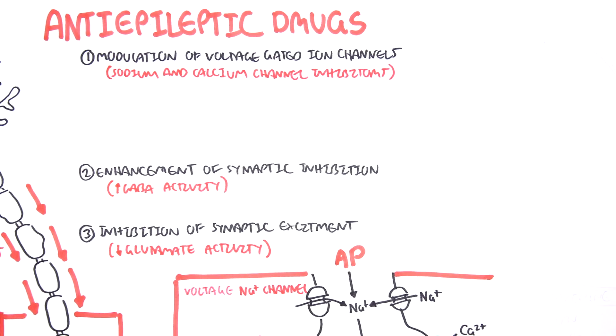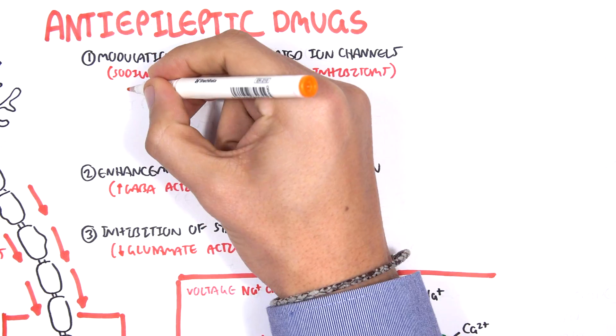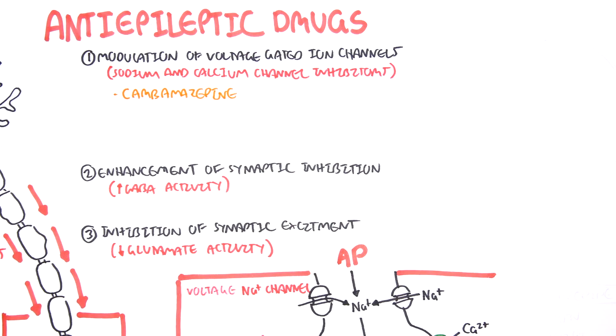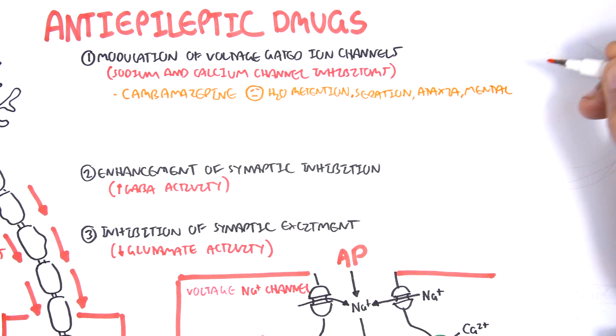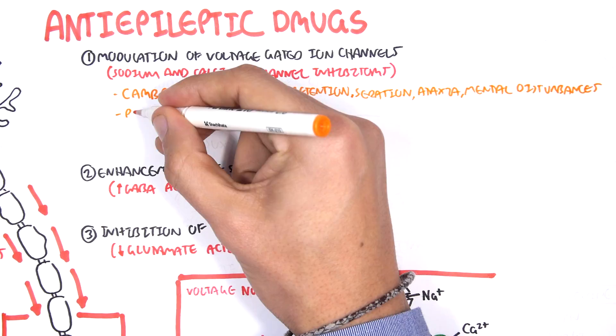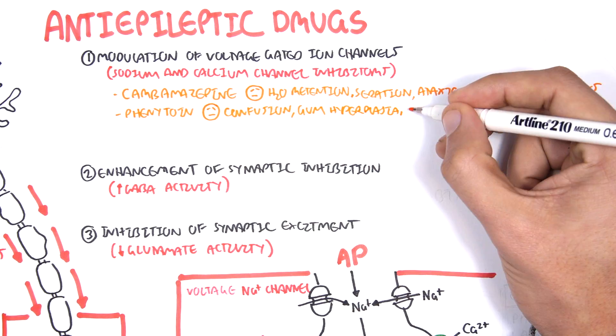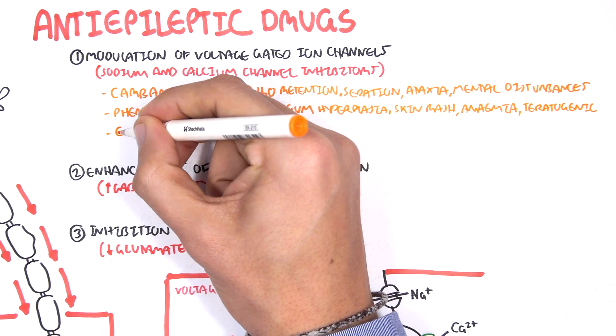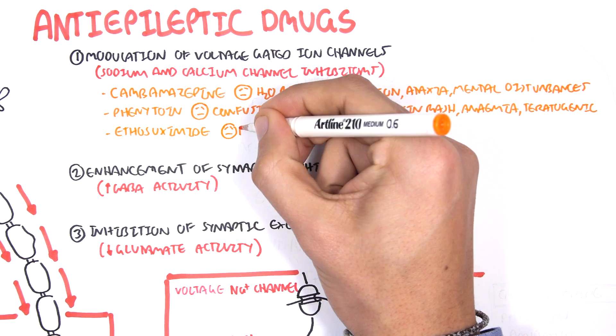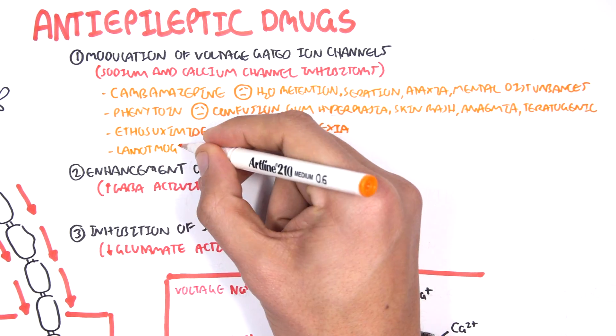Let's talk about the pharmacology and drugs used to treat epilepsy. Beginning with drugs that modulate voltage-gated ion channels, these include carbamazepine with side effects of water retention, sedation, ataxia, and mental disturbances. Phenytoin causes confusion, gum hyperplasia, skin rash, anemia, and is teratogenic. Ethosuximide causes nausea and anorexia. And finally, lamotrigine.